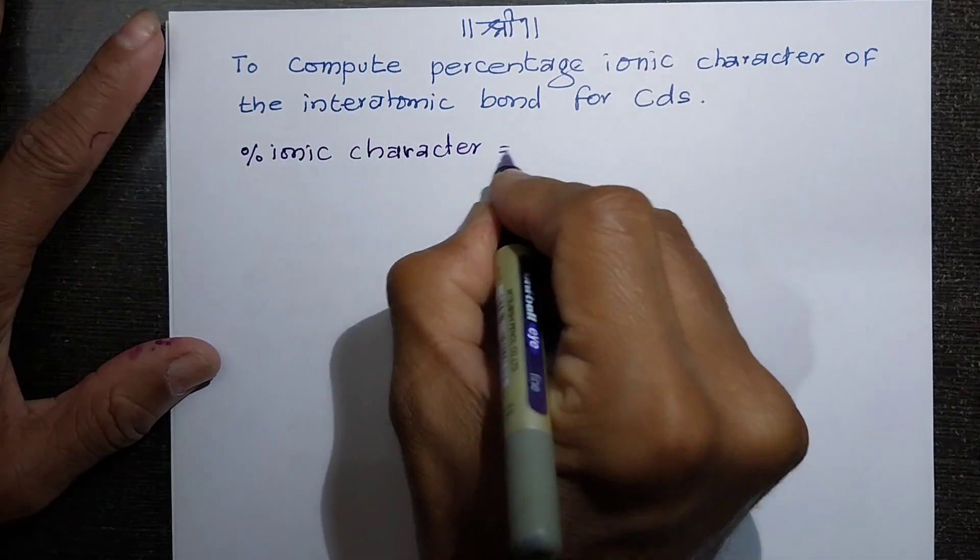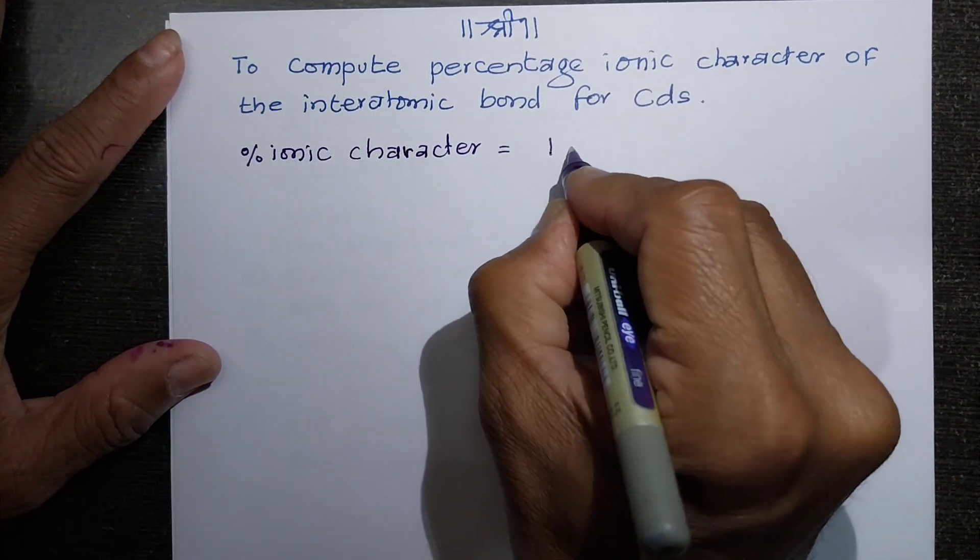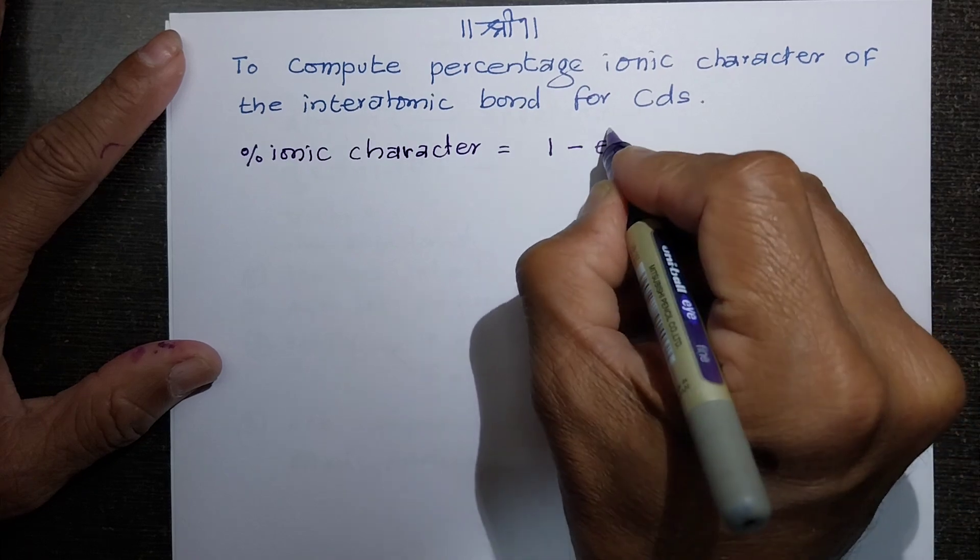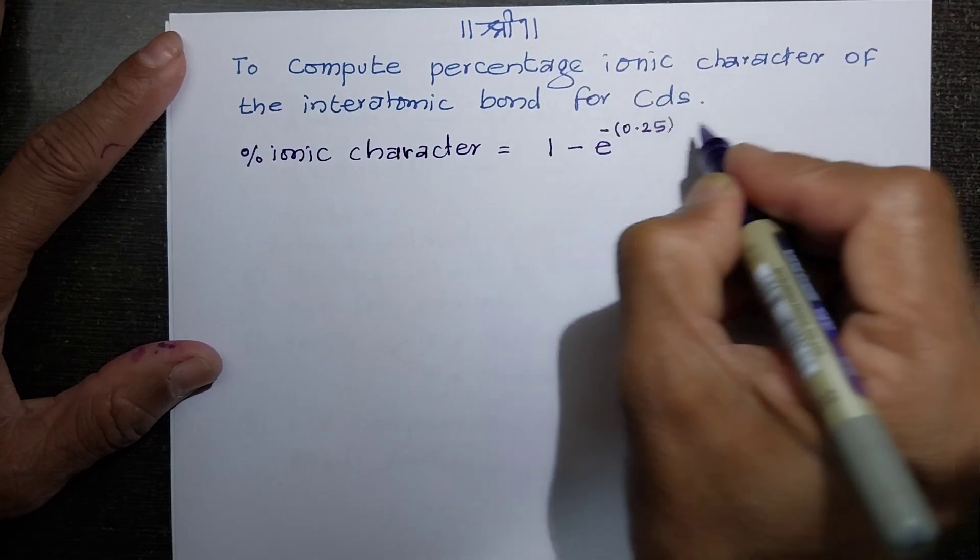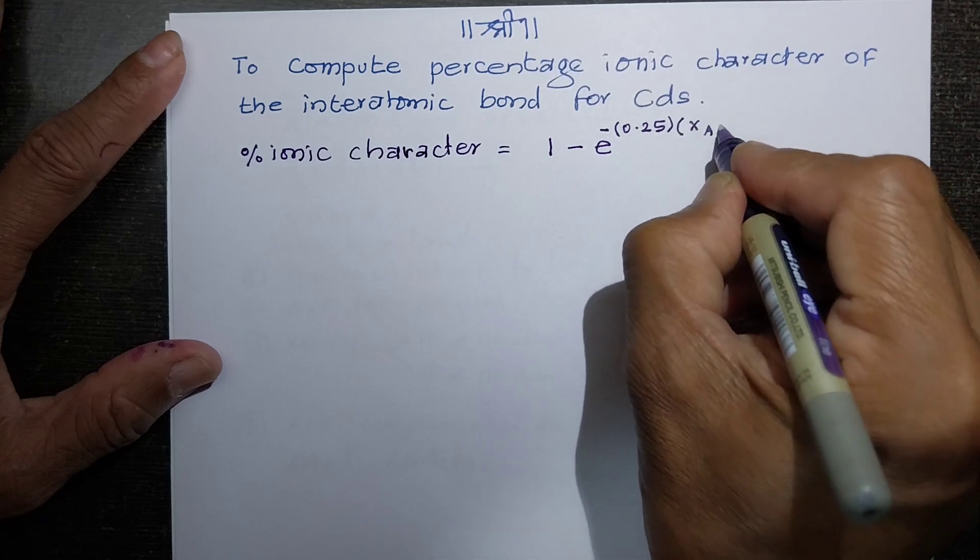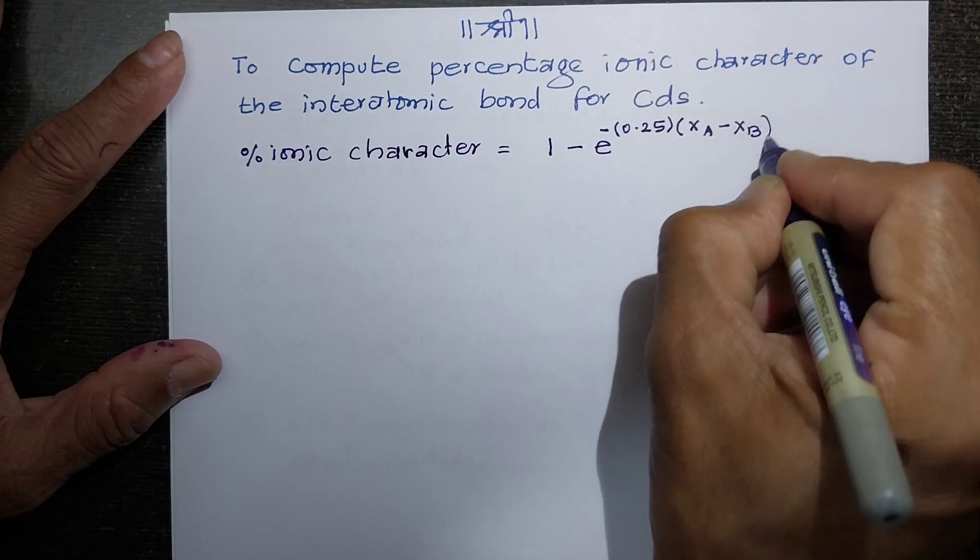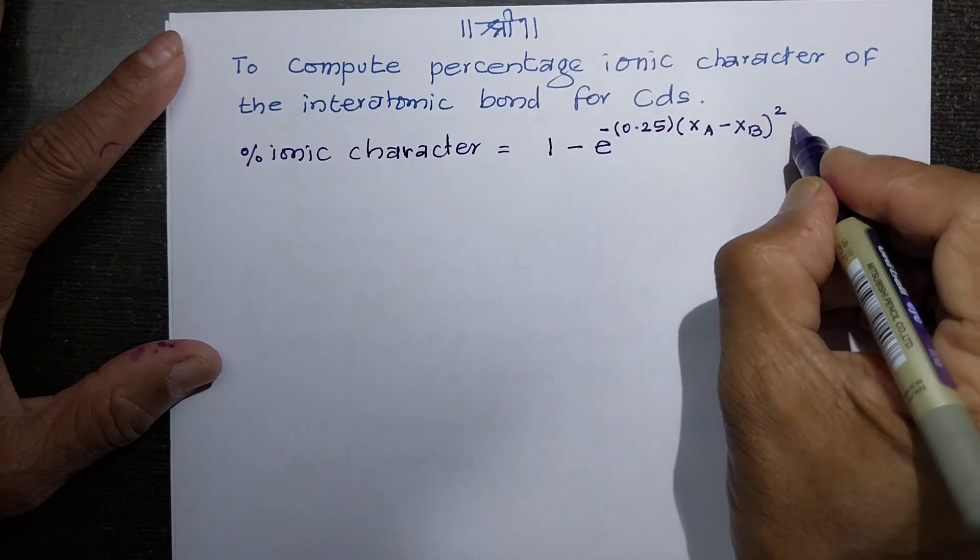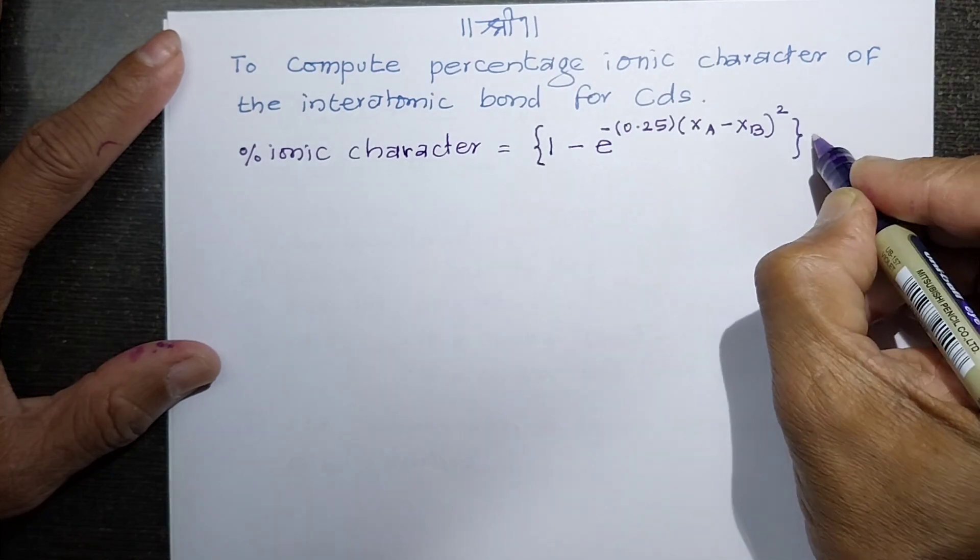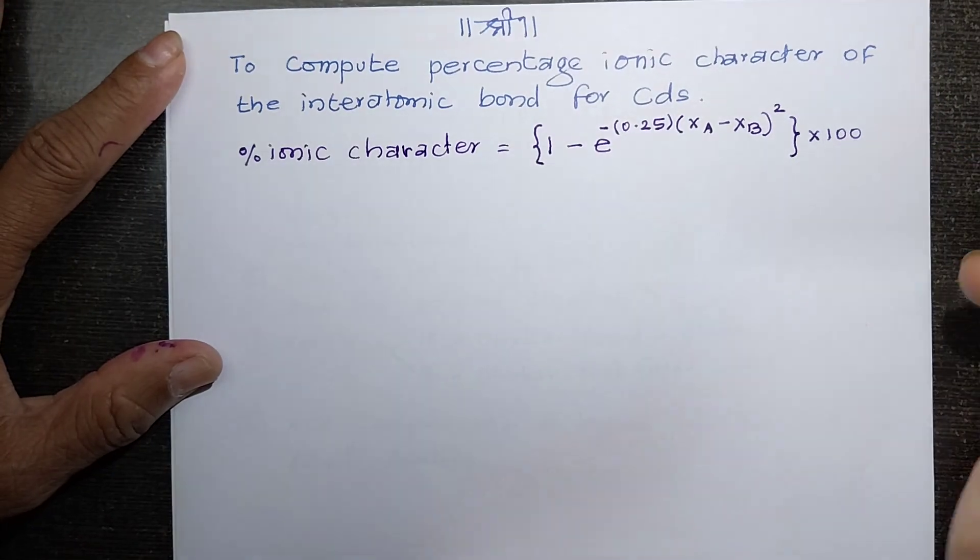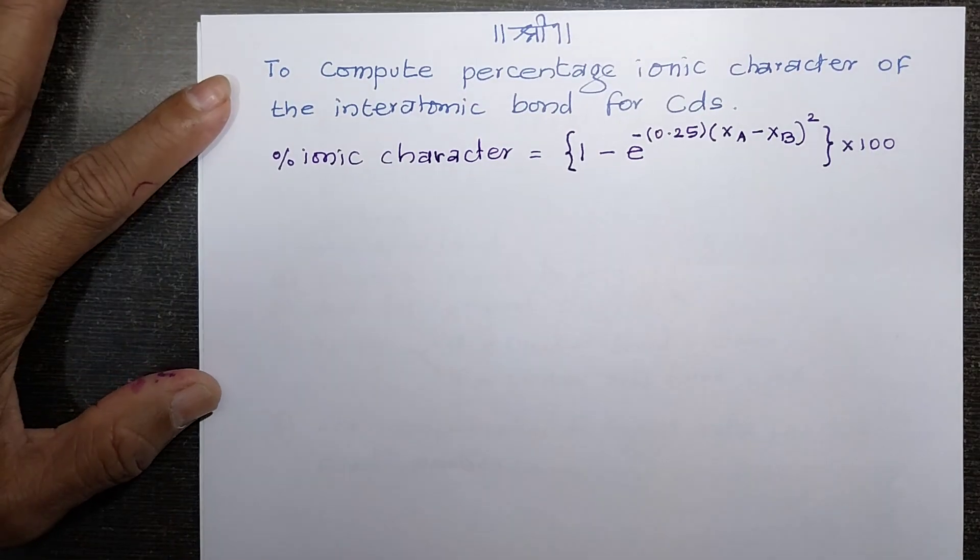is equal to 1 minus e raise to minus 0.25 in one bracket multiplied by x_a minus x_b bracket squared. This whole is then enclosed in curly brackets and the value is multiplied by 100 to find the percentage.